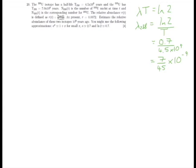We can do the same thing for the decay constant of uranium-235. That's going to be 0.7 — log 2 — divided by 7×10⁸, which gives us an answer of 1×10⁻⁹.